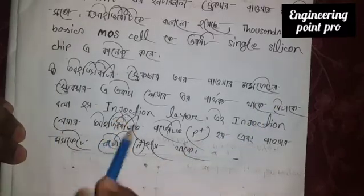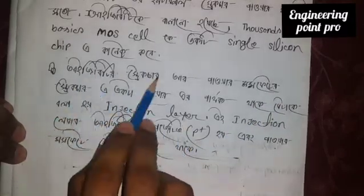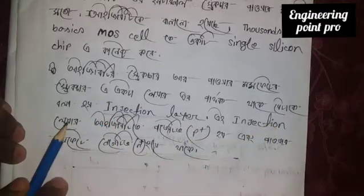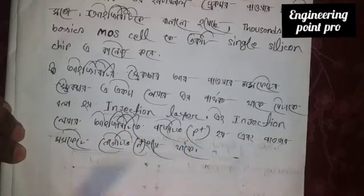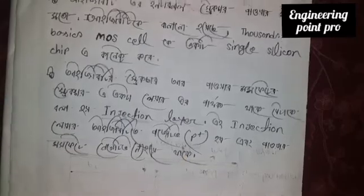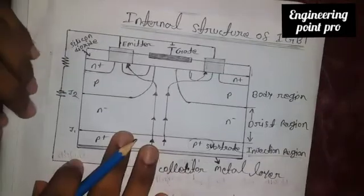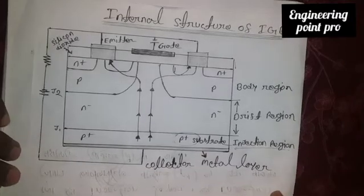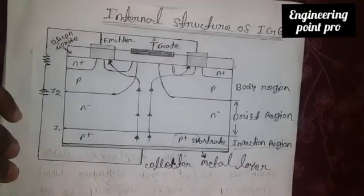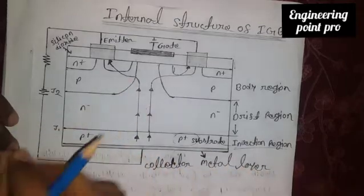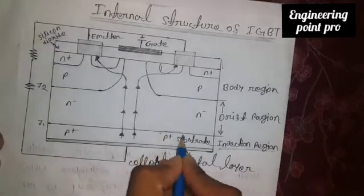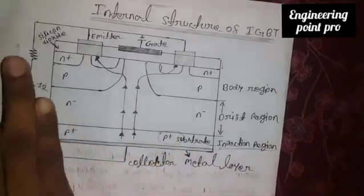This is the injection layer. The MOS cells connect to one layer, and there is a reaction layer. IGBT structure and power MOSFET structure share one layer. The next layer is the injection layer. This layer is positive, but the power MOSFET layer is negative.